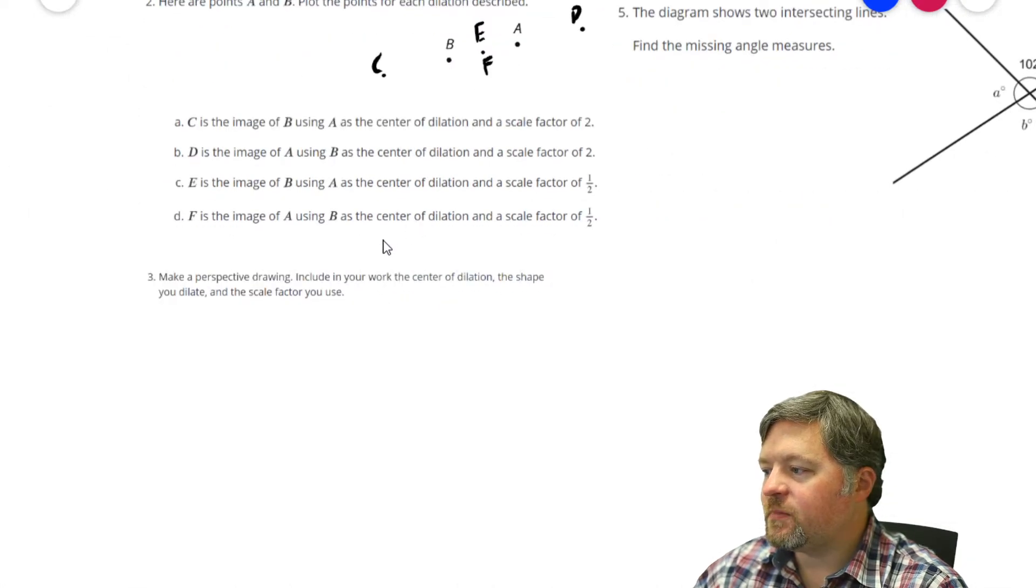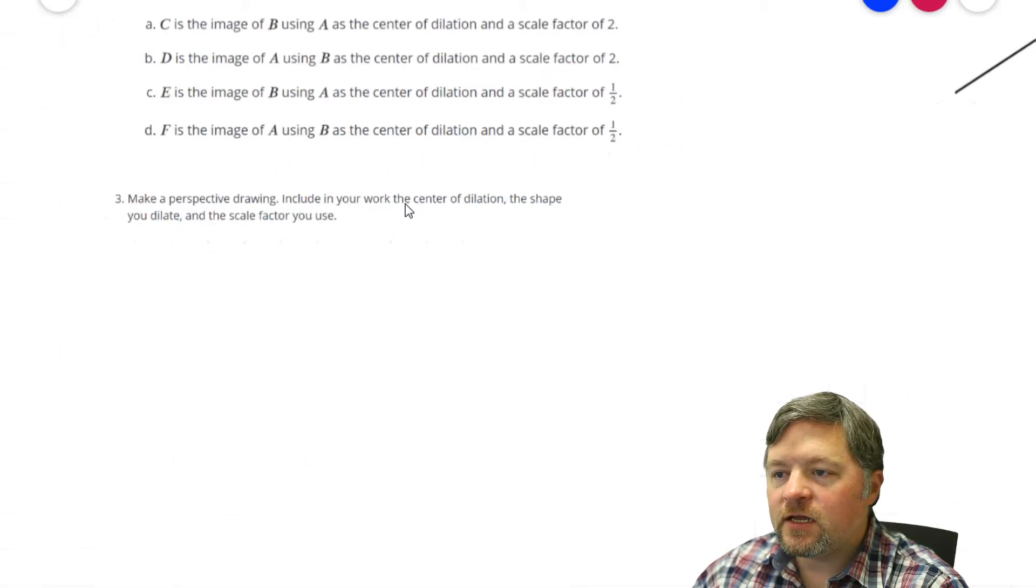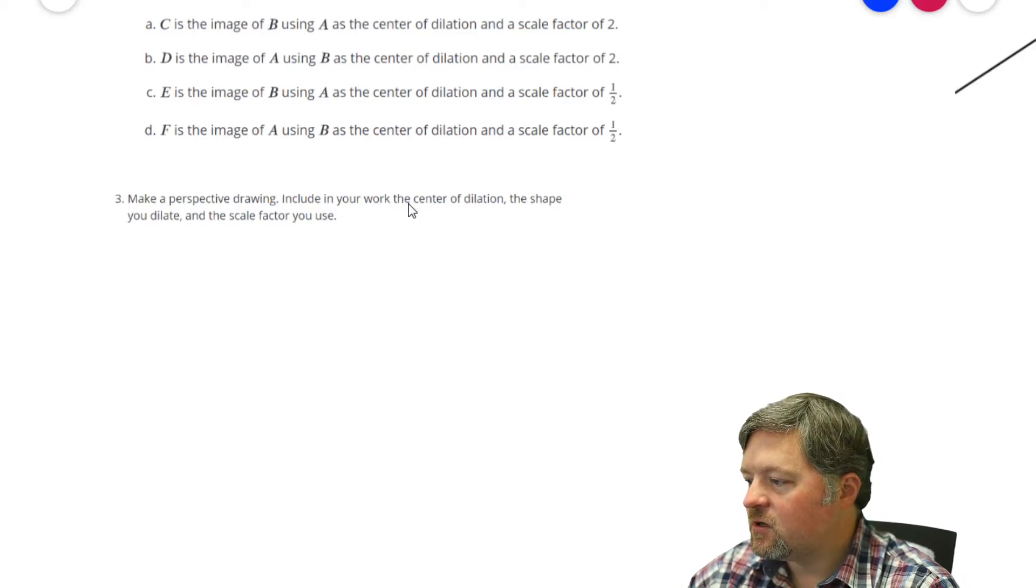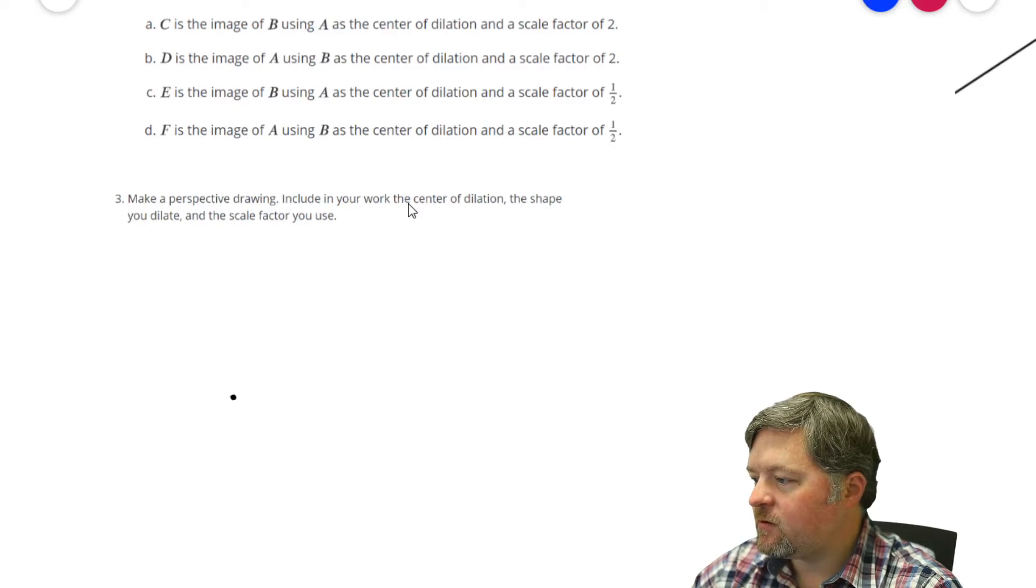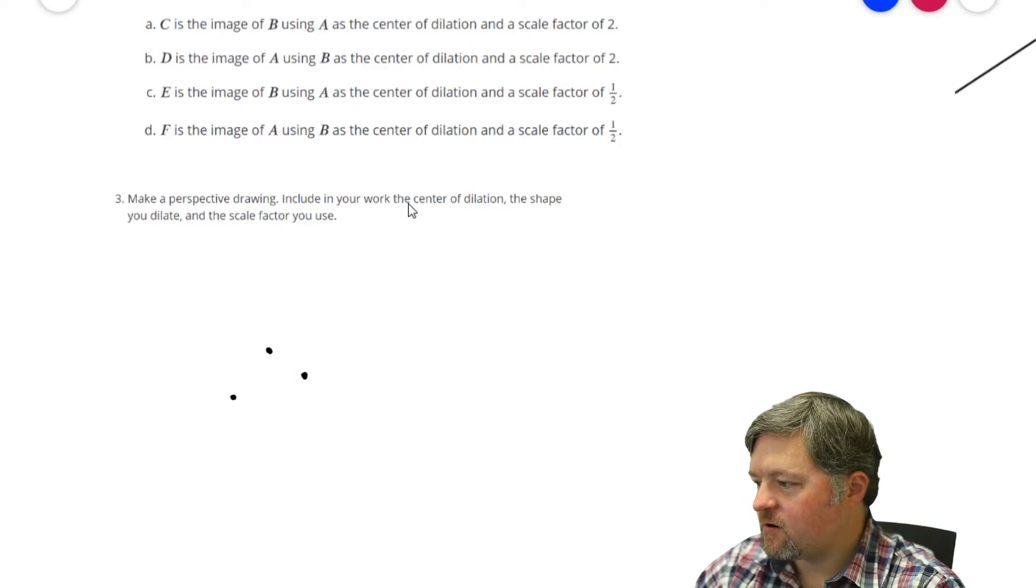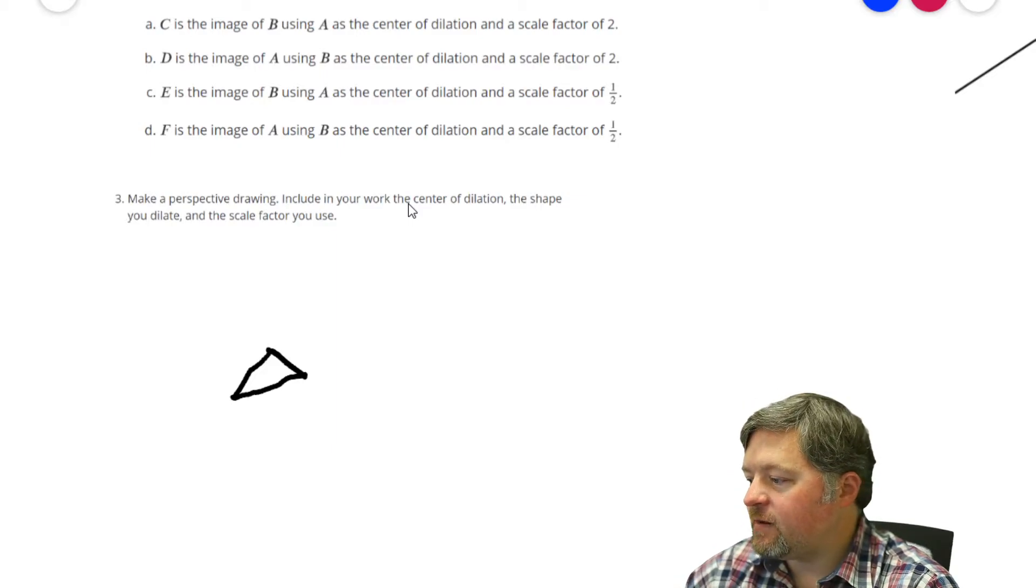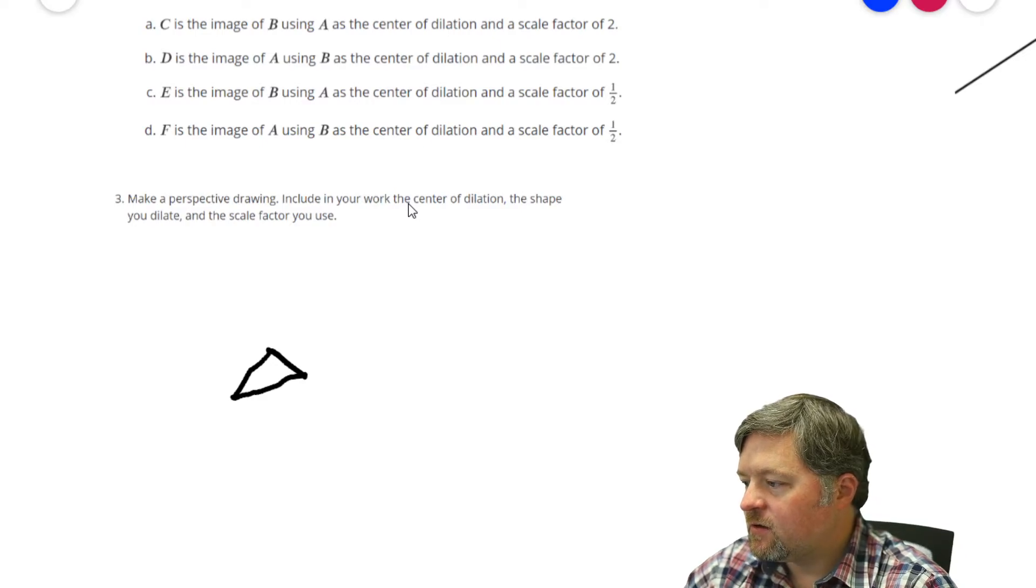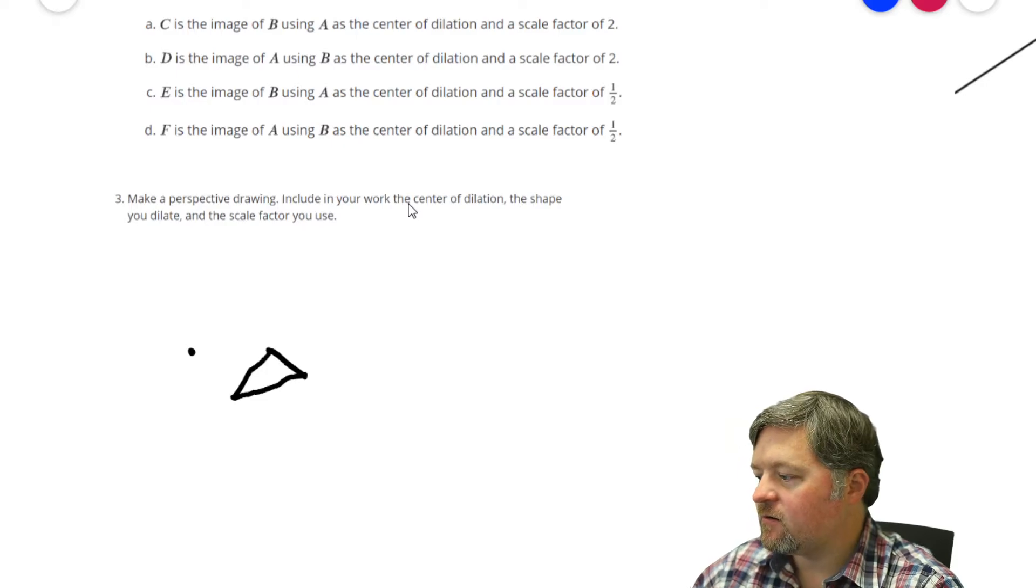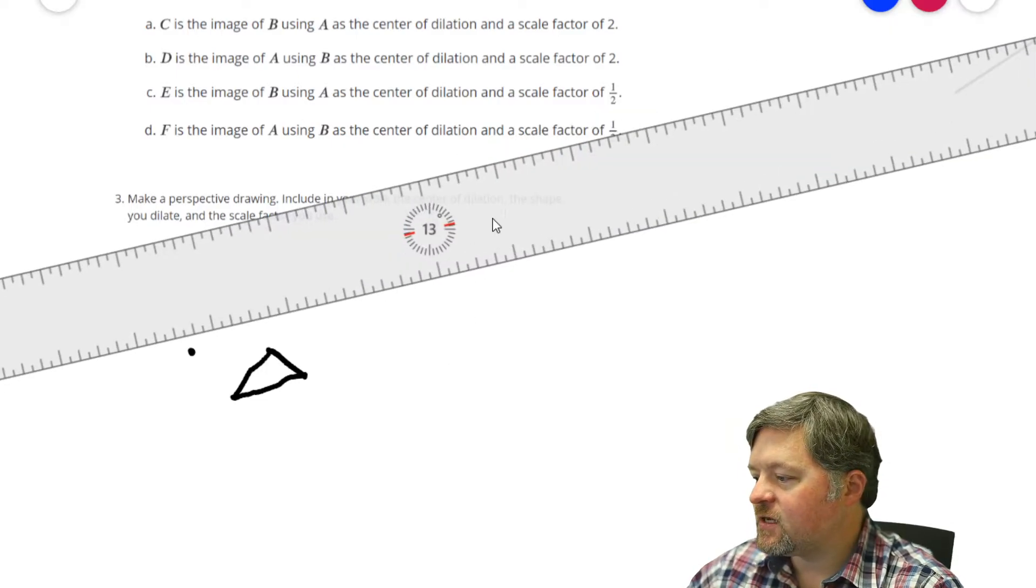Our next question is, make a perspective drawing. Include in your work the center of dilation, the shape you dilate, and the scale factor you use. So, how about if I make a shape? I'm going to make it a little easy so I can draw it quickly. That's not my best ever work. I'm going to start over. There. So, if that's my shape, I need a center of dilation. How about if I use my center of dilation right here?